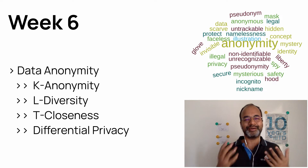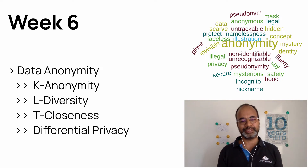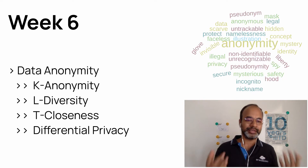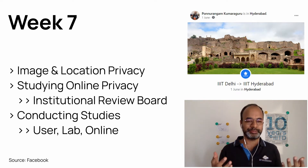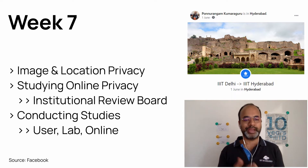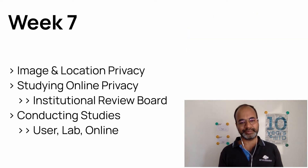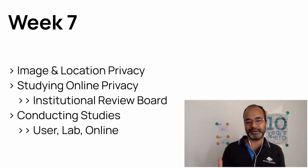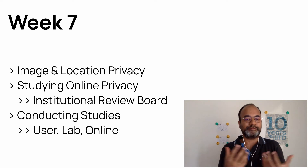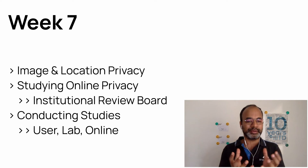Week six, we'll talk about data anonymity — how can you anonymize data, and how should you anonymize data if you were to share it with others — covering K-anonymity, L-diversity, T-closeness, and differential privacy. Week seven, we'll talk about location privacy. Lots of people use online social media where they share their location while making a Facebook update or a tweet. We'll also touch on the ethics of studying online privacy: you can collect data from social media about people from online sources, but how much can you study? What is an ethics committee and institutional review board? We'll also cover conducting lab studies, user studies and online studies within the topic of online privacy.